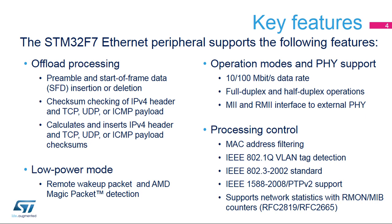In addition to the previous features, the peripheral brings several types of heavy processing offloading. It supports automatic management of preamble and start-of-frame tags, checksum checking for received frames, and checksum computation and insertion for transmitted frames. A functional low-power mode reduces power consumption by stopping the peripheral until special packets are received, enabling a network-controlled system wake-up.